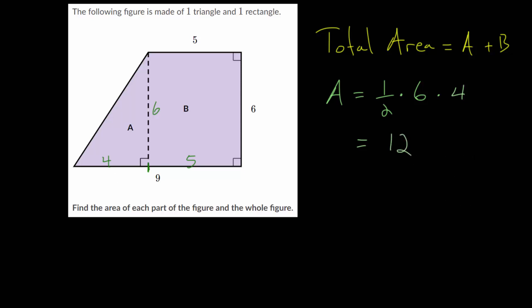From here, let's find the area of B. Since B is a rectangle, we just multiply the length times the width. So 5 multiplied by 6, which is 30.